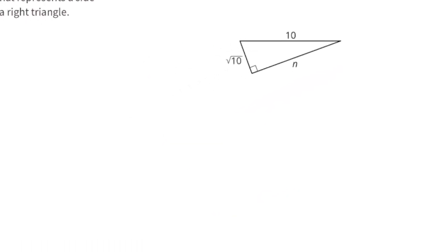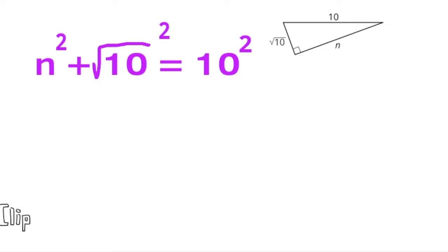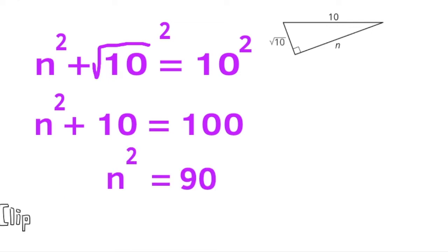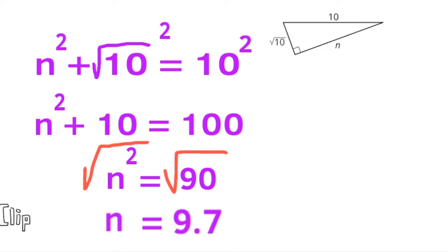Let's find another missing side length. We use n² + (√10)² = 10². Since (√10)² = 10 and 10² = 100, the equation reads n² + 10 = 100. Subtracting 10 from 100 gives 90, so n² = 90. The square root of 90 is approximately 9.7, so side length n is approximately 9.7 units.